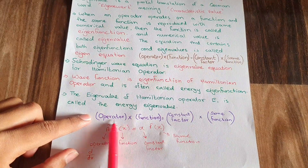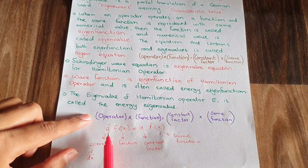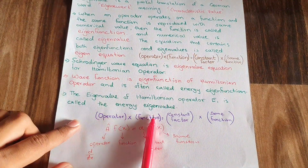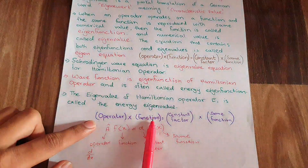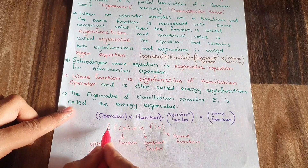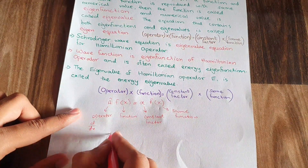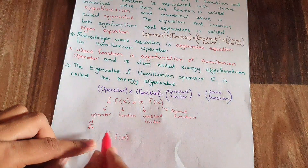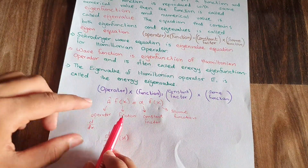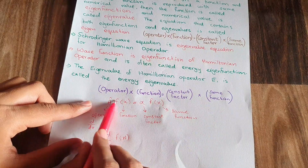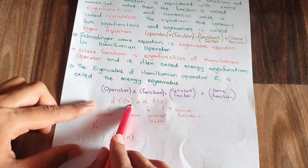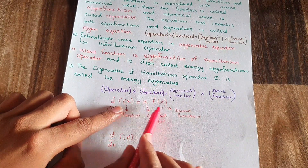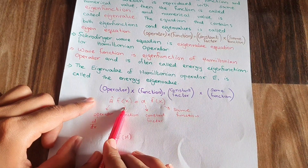Taking an example — first of all you need to know what is an operator. An operator is a mathematical instruction applied on a function. Like if I want to apply the derivative on f, then I can write d/dx into f. Here d/dx is the operator that is being applied on the function f. It will give out a constant factor multiplied by the same function that was on the left hand side of the equation.